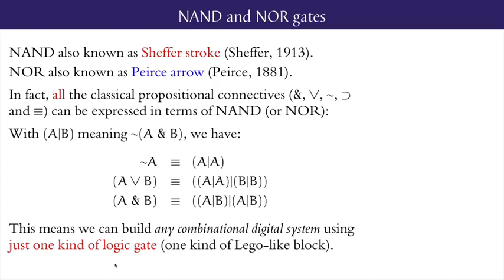The NAND and NOR gates are quite well known in logic under different names. The Sheffer stroke for NAND, dating from 1913, and the older Peirce arrow for NOR going back to 1881. As a logic connective, each has the property that all of the classical propositional connectives—AND, OR, NOT, implies, and if and only if—can be rewritten with a logically equivalent formula containing only NANDs or only NORs.